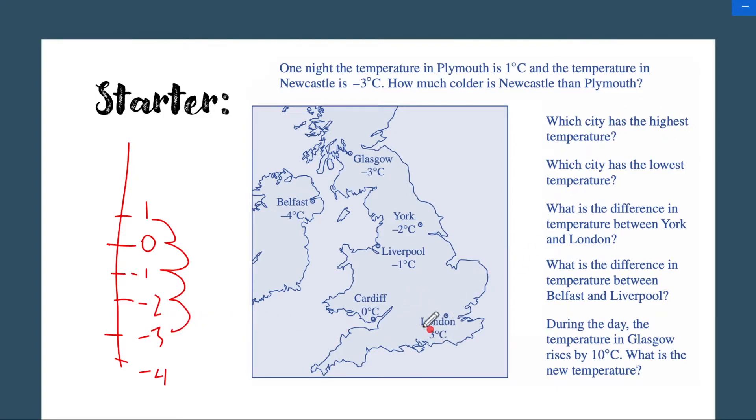Which city has the highest temperature? That would be London. Which city has the lowest temperature? That would be Belfast. What is the difference in temperature between York and London? York is -2, London is 3. So from 3 to -2 would be 1, 2, 3, 4, 5. That would be 5 degrees.